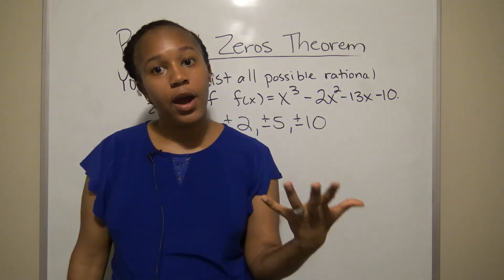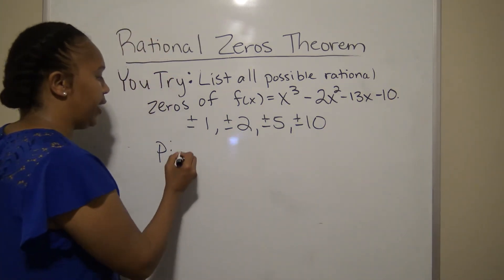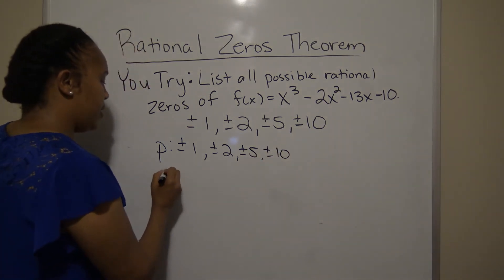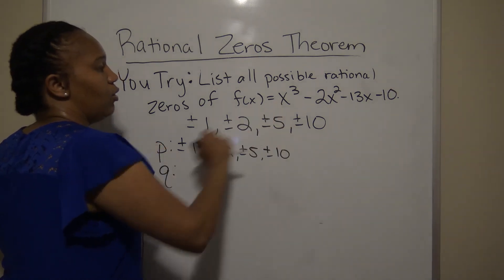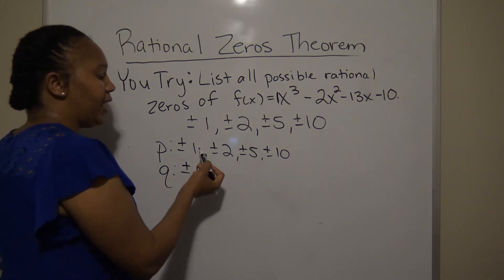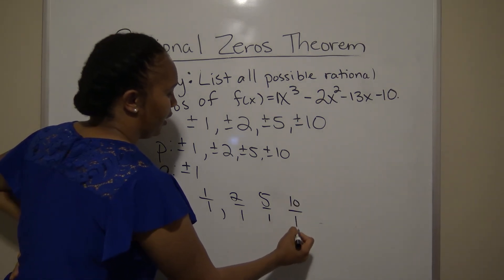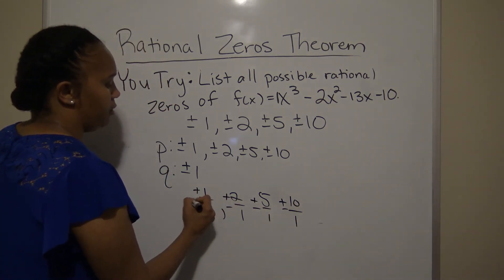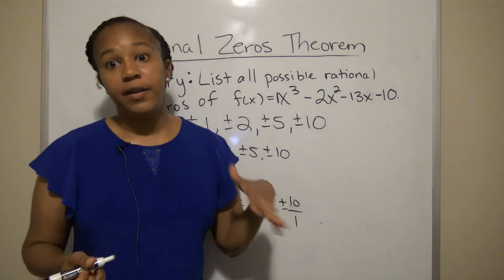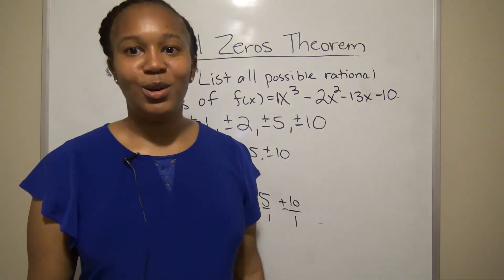Here's the walkthrough: list p, the factors of the constant term -10: that's ±1, ±2, ±5, ±10. Then list q, the factors of the leading coefficient, which is 1, so q = ±1 only. Writing each p over each q gives 1/1, 2/1, 5/1, 10/1, which simplify to 1, 2, 5, and 10 — plus and minus each. When the leading coefficient is 1, it's always a bit easier.